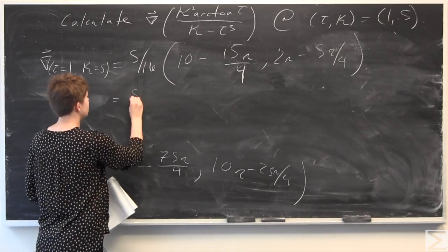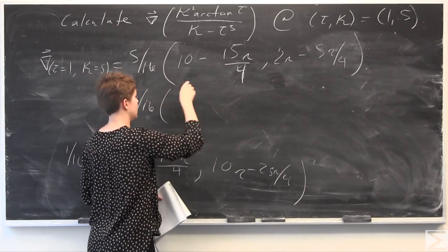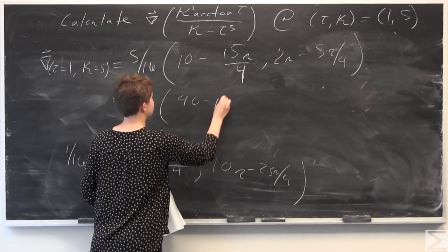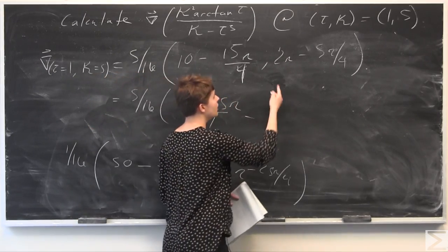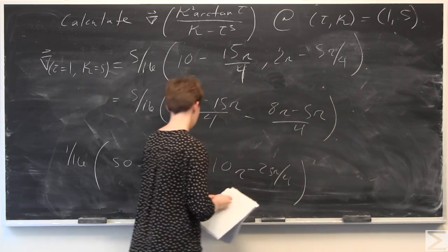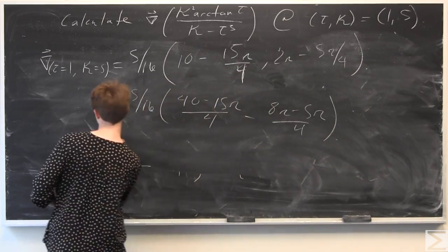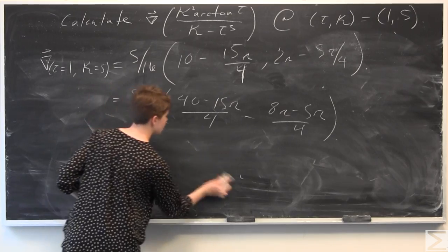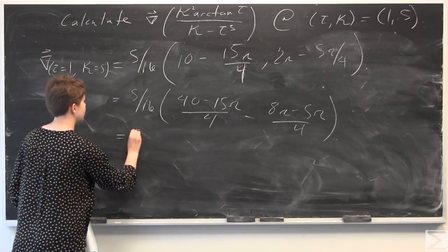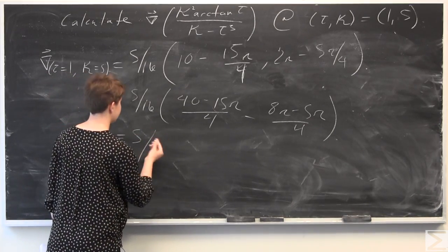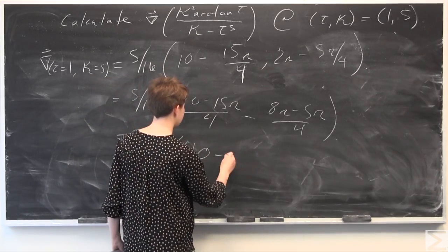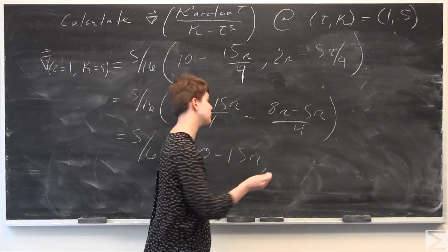Getting a common denominator of 4: 10 times 4 is 40, so we have 40 minus 15 pi over 4. And 2 times 4 is 8, so 8 pi minus 5 pi over 4. Finally, we pull out a 1 over 4, giving 5 over 64 on the outside. Inside we have 40 minus 15 pi for the first component, and 8 pi minus 5 pi equals 3 pi for the second component.